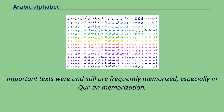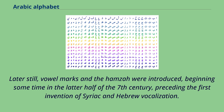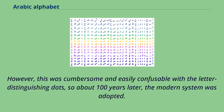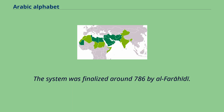Important texts were and still are frequently memorized, especially in Quran memorization. Later still, vowel marks and the Hamza were introduced, beginning some time in the latter half of the 7th century, preceding the first invention of Syriac and Hebrew vocalization. Initially, this was done by a system of red dots, said to have been commissioned in the Umayyad era by Abu al-Aswad al-Du'ali: a dot above equals 'a', a dot below equals 'i', a dot on a line equals 'u', and double dots indicated nunation. However, this was cumbersome and easily confusable with the letter-distinguishing dots, so about 100 years later the modern system was adopted, finalized around 786 by Al-Farahidi.